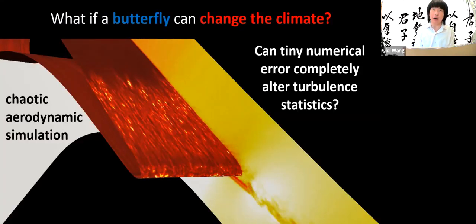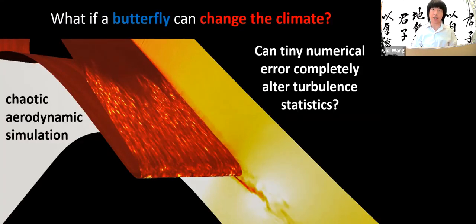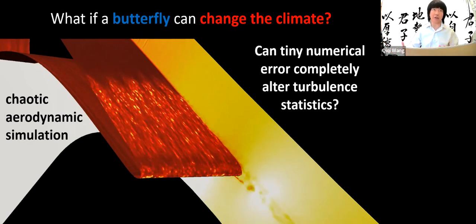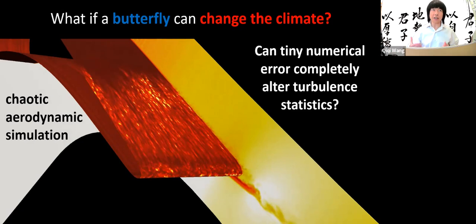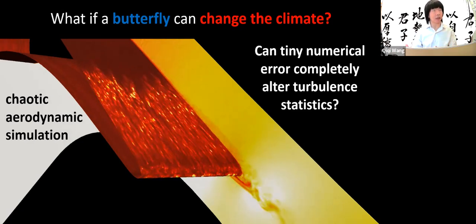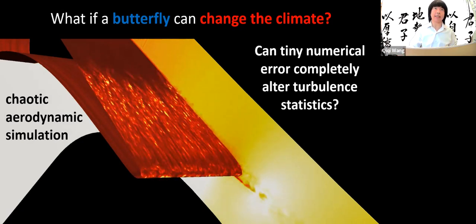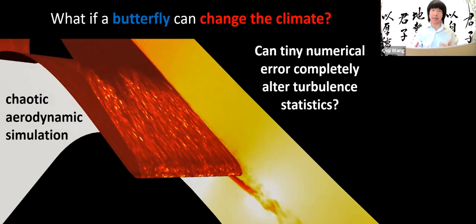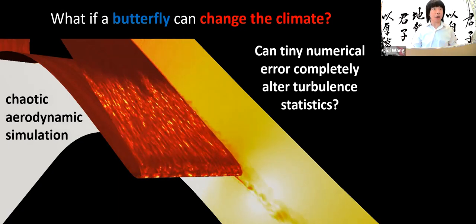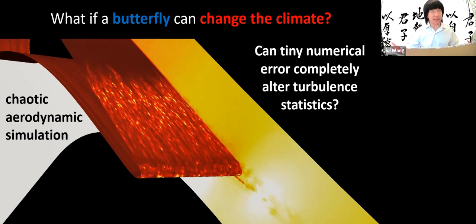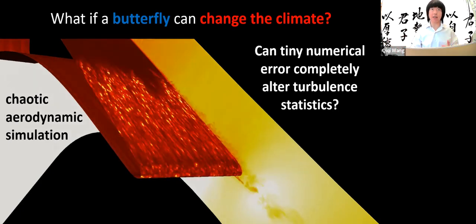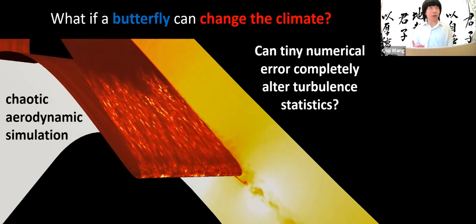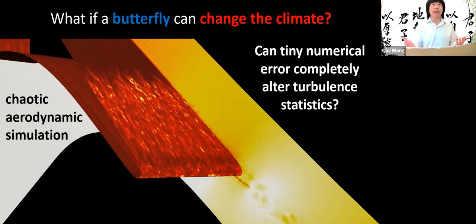If we cannot predict the statistics of the fluid dynamics accurately, we cannot predict the accumulated damage of the metal blades. We've been using a lot of these chaotic simulations to make all kinds of engineering decisions. This is a simulation I performed a few years ago to determine engine failure due to heat flux, due to melting of turbine blades' trailing edge. In this case, the statistics of the fluid dynamics refers to the amount of heat transfer into these engine blades, and the simulation is quite chaotic.